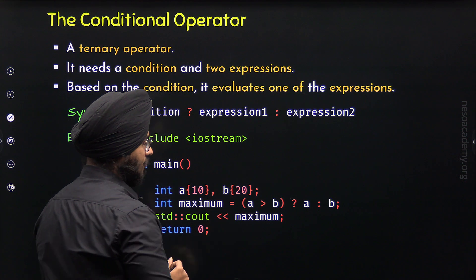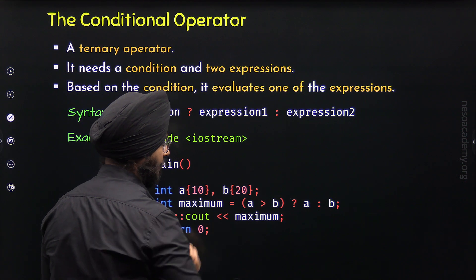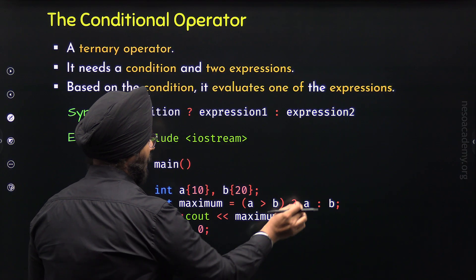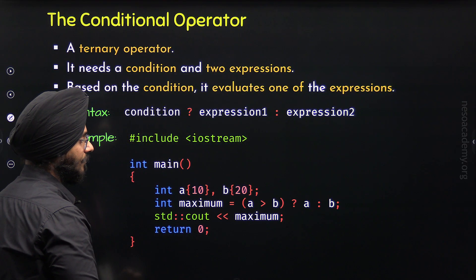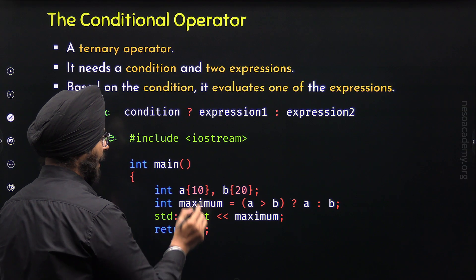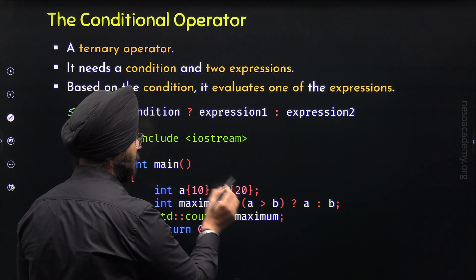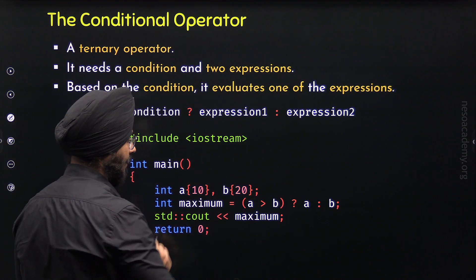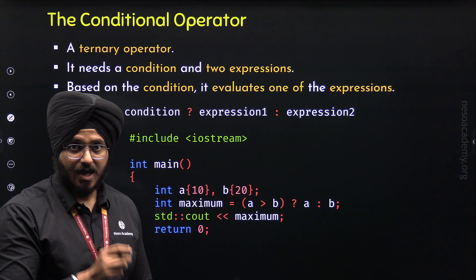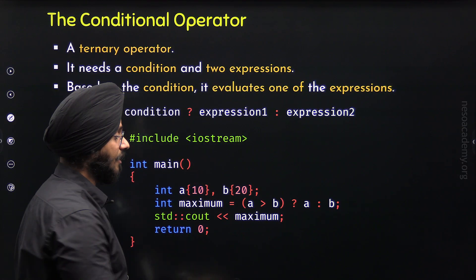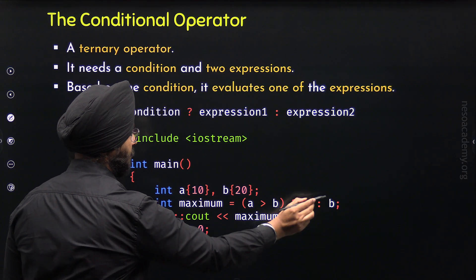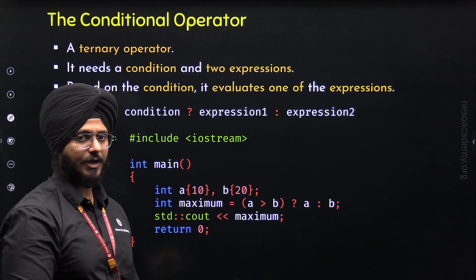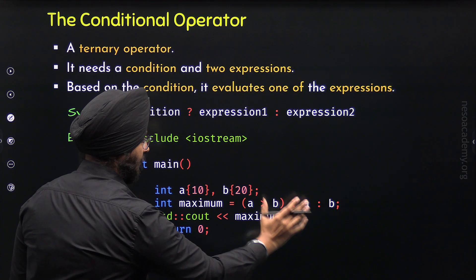I am calling this a conditional expression because we are using the conditional operator. Before the question mark, I have provided the condition a greater than b. Based on this condition, either a or b will get evaluated. The value of a is 10 and the value of b is 20, so we have 10 greater than 20. Since 10 is not greater than 20, we get false. Therefore, expression 2, which is b, will get evaluated — we get 20, and this value will be assigned to variable maximum.